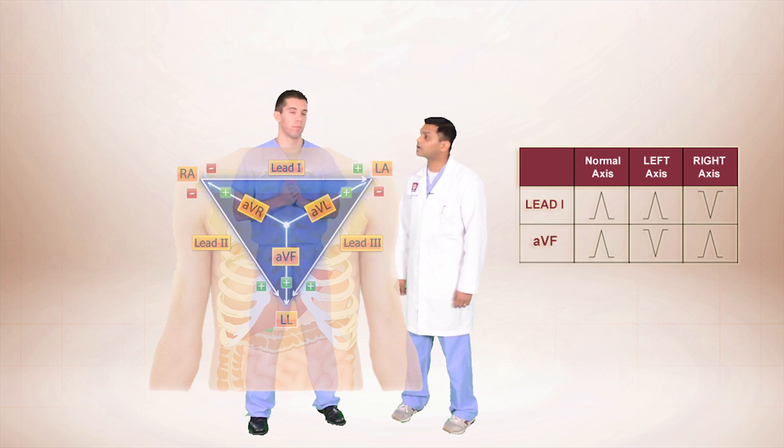That's pretty good. What about if it's positive in lead 1 and negative in AVF? Well, that would mean that our axis is somewhere in this quadrant. And we would call that left axis deviation. Exactly right. So now that we have a better understanding of how to determine axis, let's practice on a couple 12 lead EKGs.